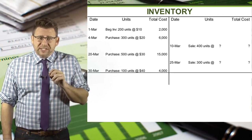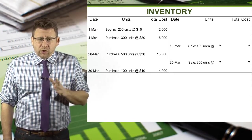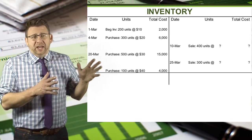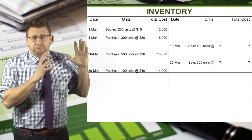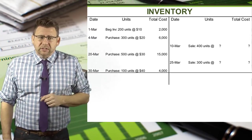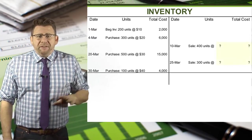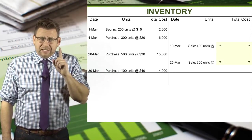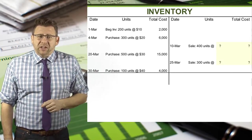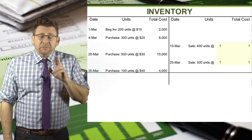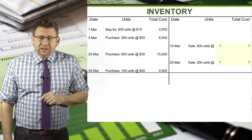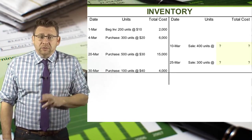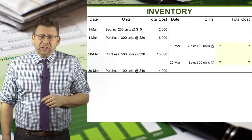Additionally, the purchases and sales are recorded when they happen. I like to present the same data in a big inventory T-account. Everything listed here isn't dependent on the valuation method — the items that are dependent are the ones highlighted on the credit side of the account. So let's figure those out.